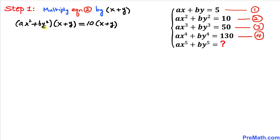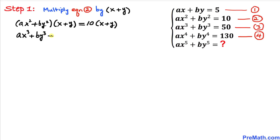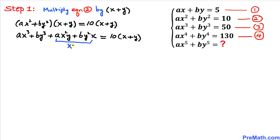Now let's multiply these two binomials by double distribution, sometimes called the rainbow method. Multiplying across the board gives us ax³ + by³ + ax²·x, leaving the right-hand side as 10 times (x + y). We can see that xy is common in those remaining two terms.